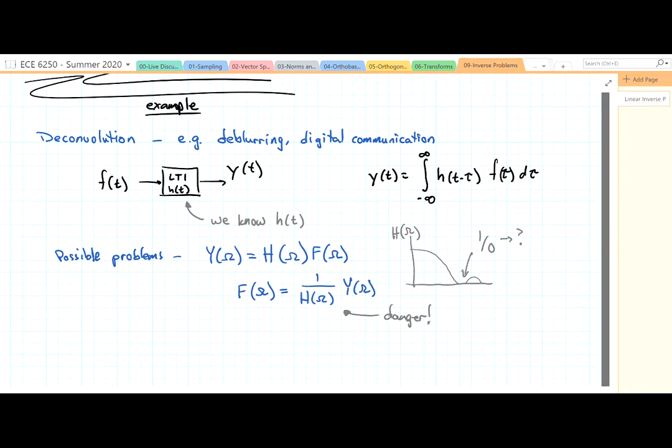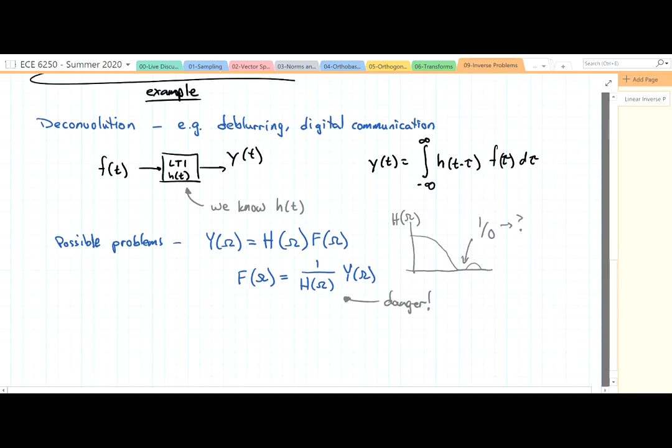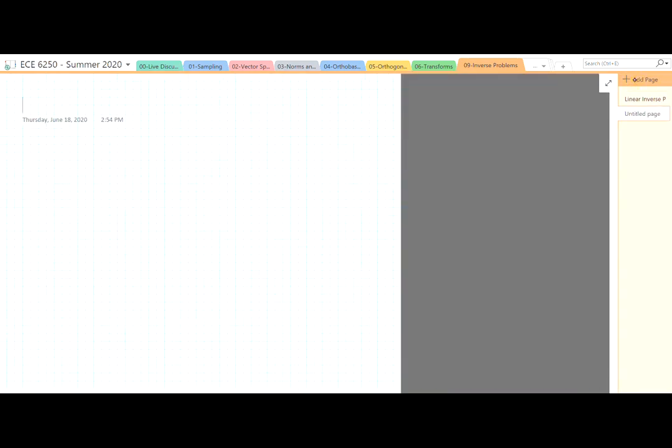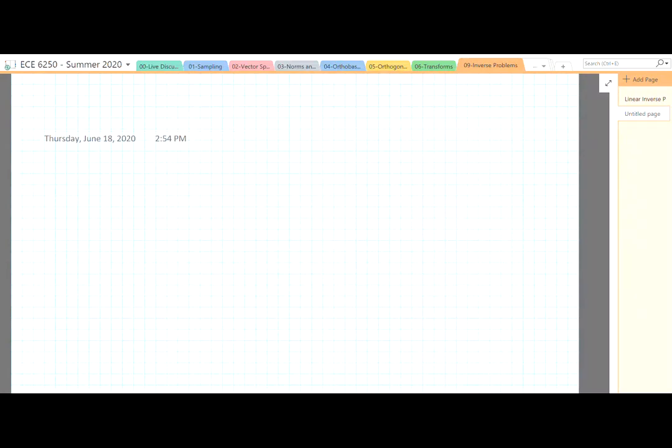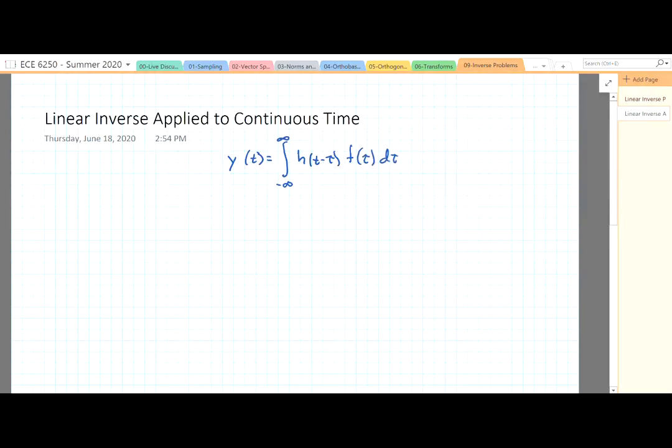Okay, so we have a continuous time signal and a potential approach that has some pitfalls as we've just witnessed. But let's look at generally how we do this matrix-type solution if we have continuous time signals. Okay, from the previous page, for this example, we have h(t-τ)f(τ)dτ.